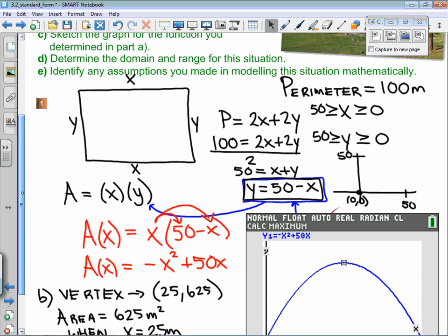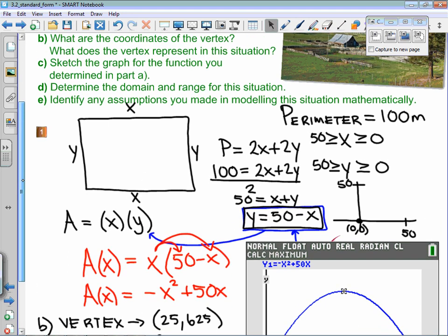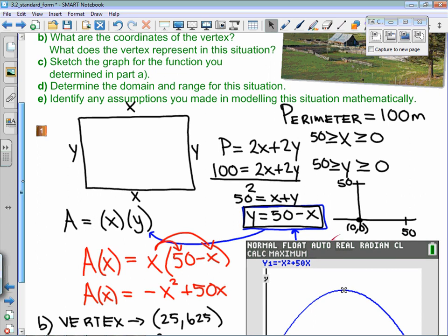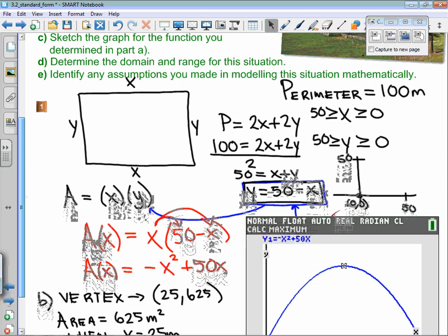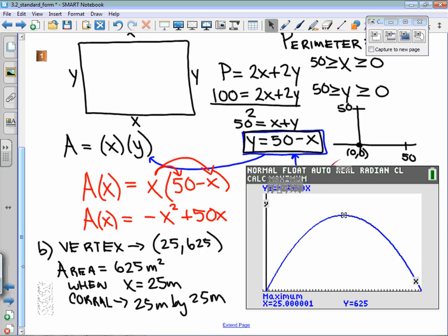All right, so that's B and C. It wants us then for D to determine the domain and range for this situation, and then E is to identify any assumptions you made in modeling this situation. So I would argue that you could not make a corral.